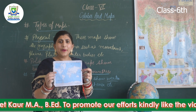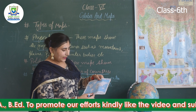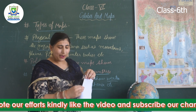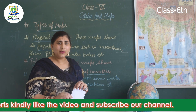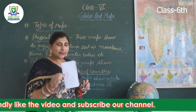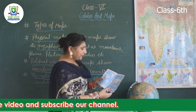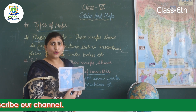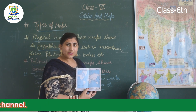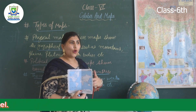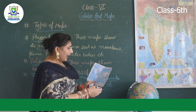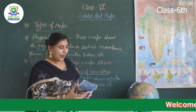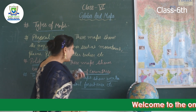Another key difference is that you cannot carry a globe in your pocket, but a paper map at a small scale can be folded and kept in your pocket. These kinds of maps are helpful for people like tourists who want to find a location.